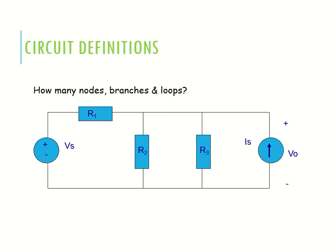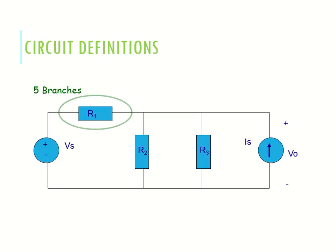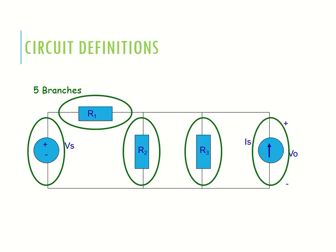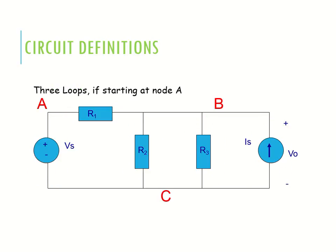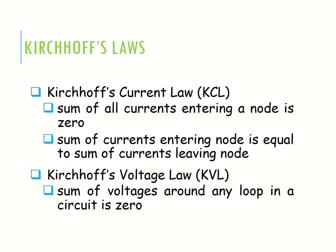In this circuit, we have to find the number of nodes, branches, and loops. There are a total of three nodes: the first, second, and third nodes. There are five branches: the first, second, third, fourth, and fifth. There are three loops: the first loop, second loop, and third loop.